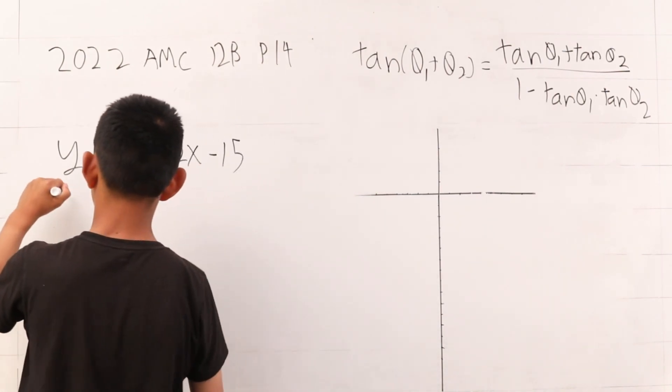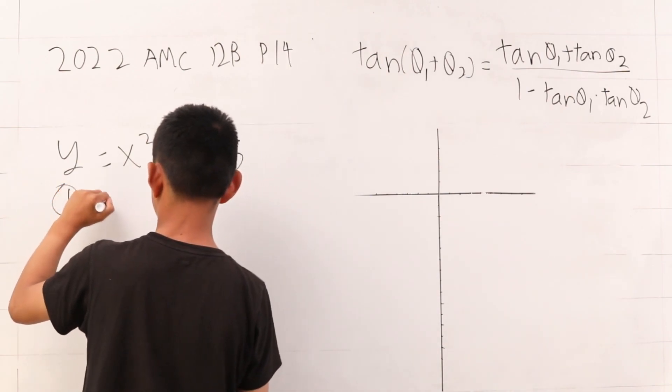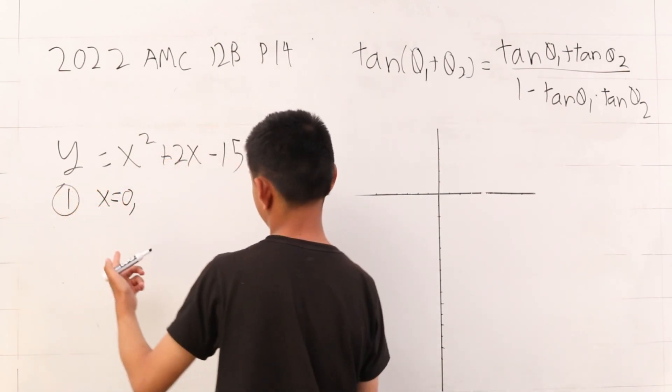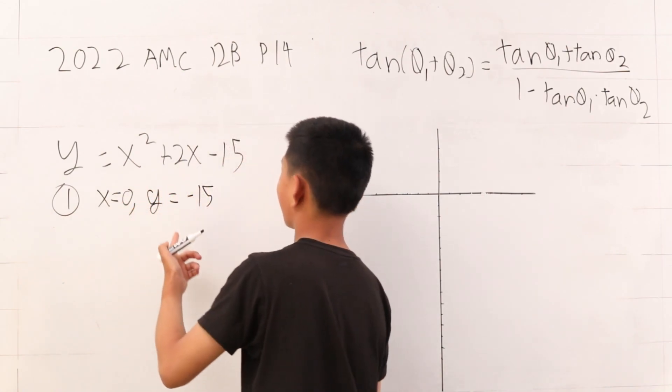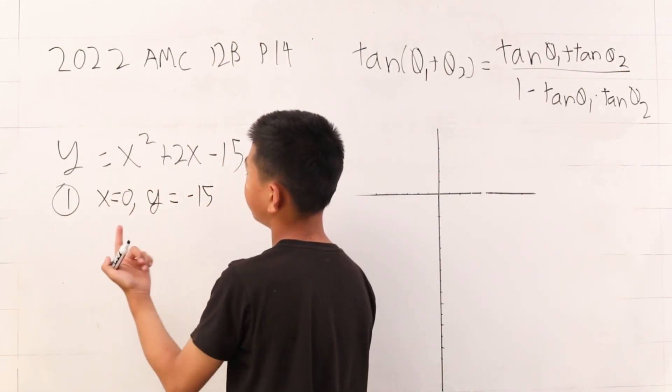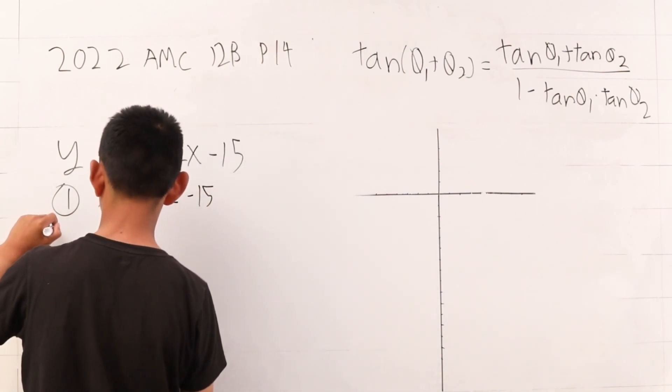There are two cases. The first case is when x is 0. When x is 0, y is negative 15. So we have our first point.